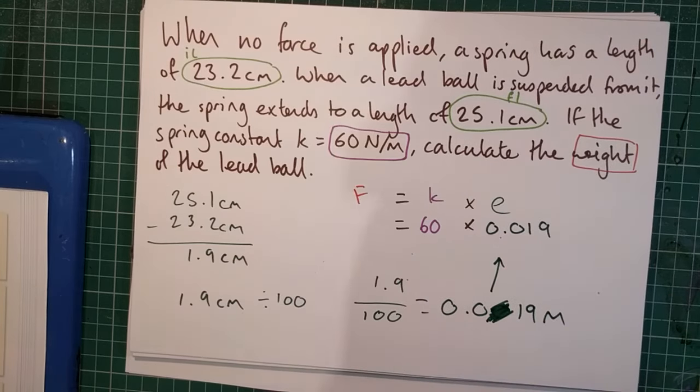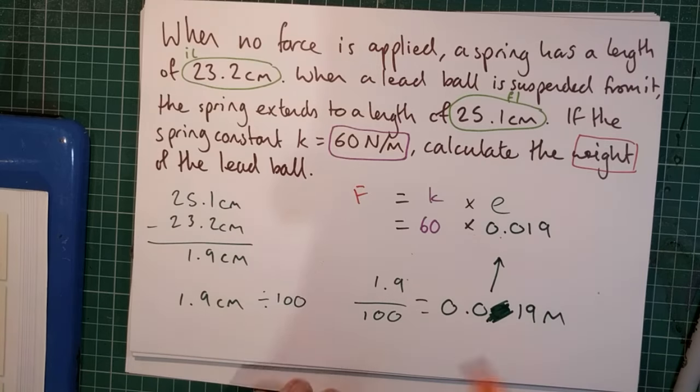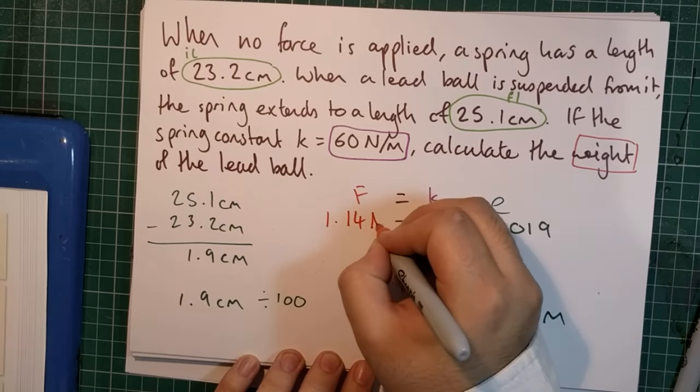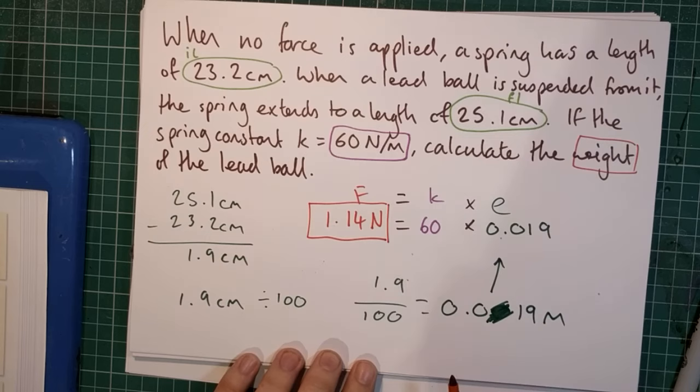So, 60 times 0.019, I'll just put it into my calculator, and I find that the answer is 1.14 newtons. And that there is the weight of the lead ball.